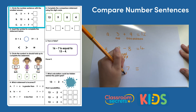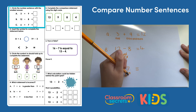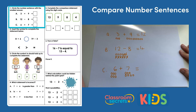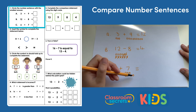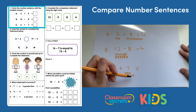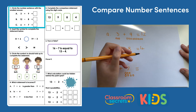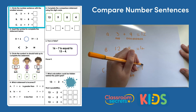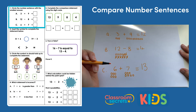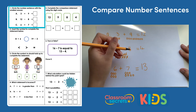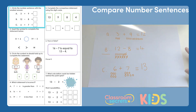And now I need to count up to see how many there are together. I'm going to count on from seven because that's my larger number. Seven, eight, nine, ten, eleven, twelve, thirteen. So remember I'm looking for the number sentence with the smallest answer. Well it's b because four is the smallest number.